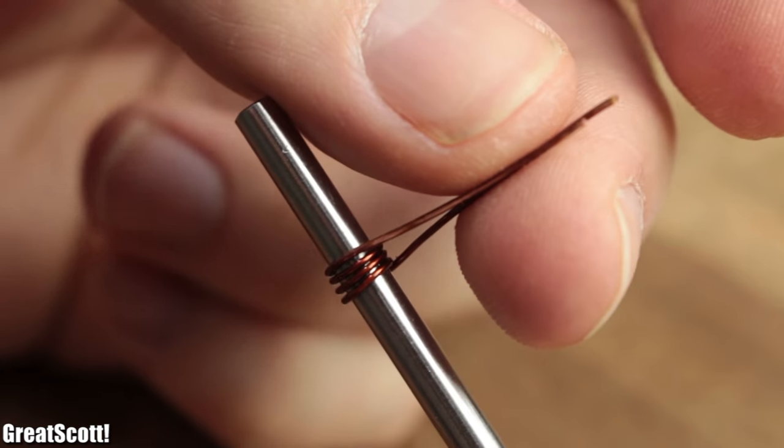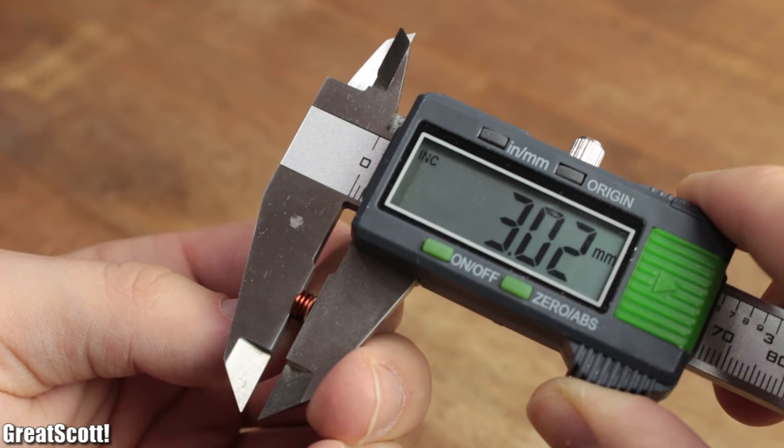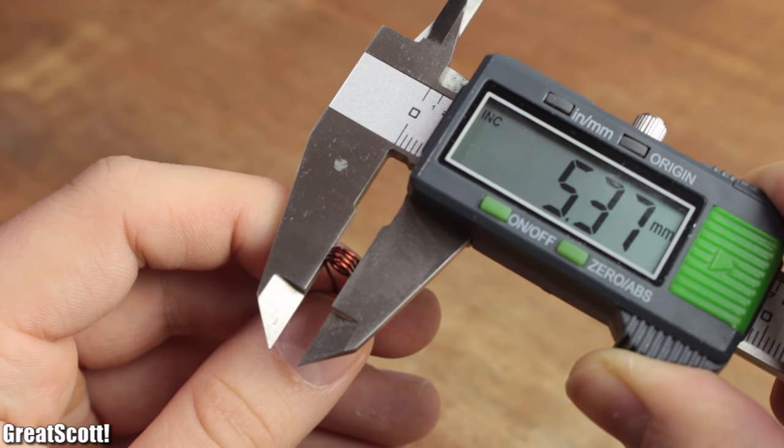Really, not that hard. My coil has a length of around 3mm, and a diameter of 5.3mm.